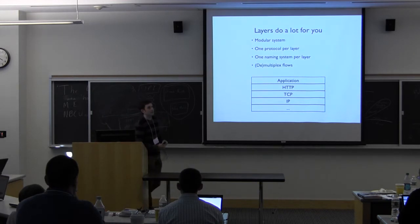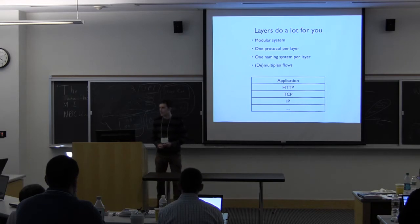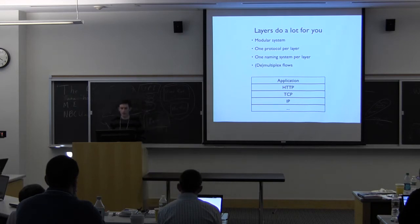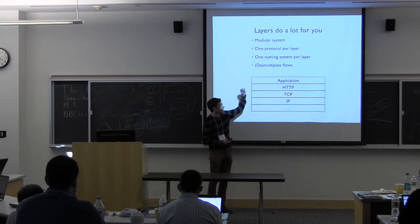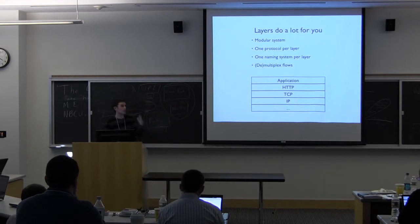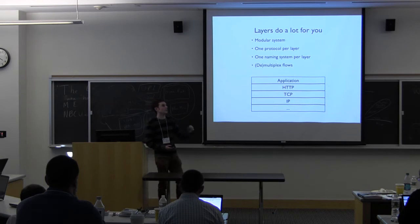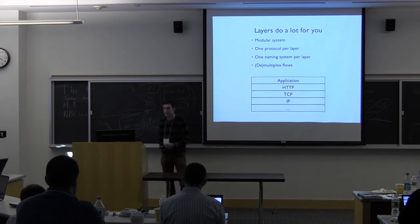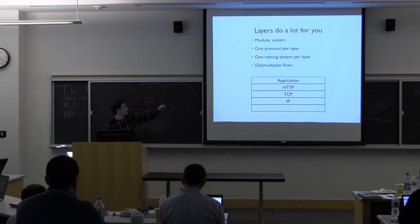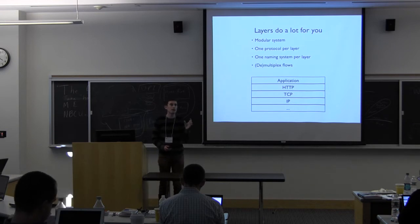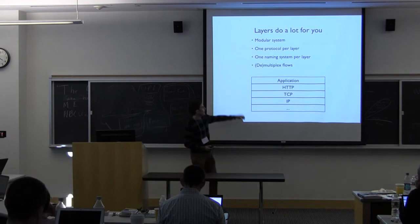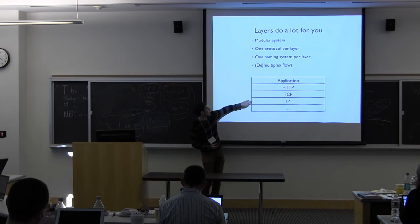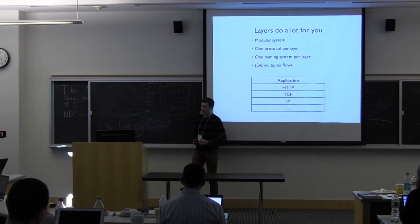But these layers do a lot for us. They give us a kind of modularity that you can't otherwise get. Each layer is a modular system that you can think about on its own. Each layer has a characteristic protocol that it speaks. The vocabulary you use for HTTP is quite different from the vocabulary you use for TCP or for IP, let alone whatever your application is. Each layer has a distinct naming system. The Unix kernel manages processes named by process ID, but the TCP layer names connection endpoints by IP and port combination. They aggregate flows going down the stack, and they de-aggregate and de-multiplex flows going up the stack. So layering's great.